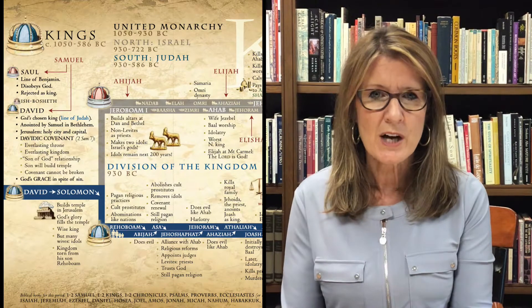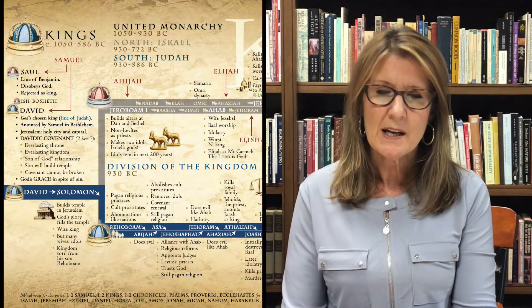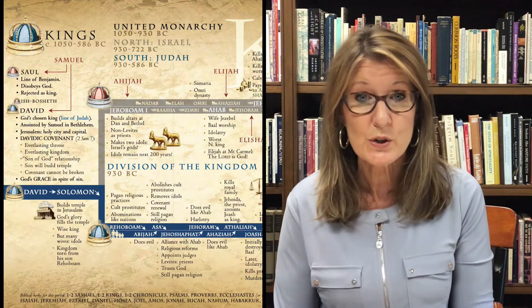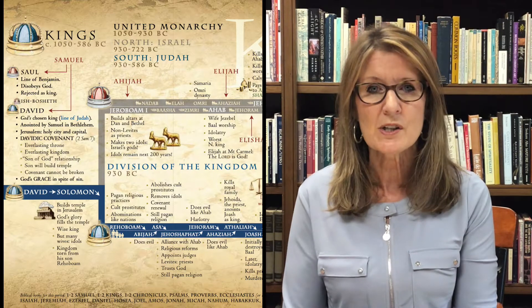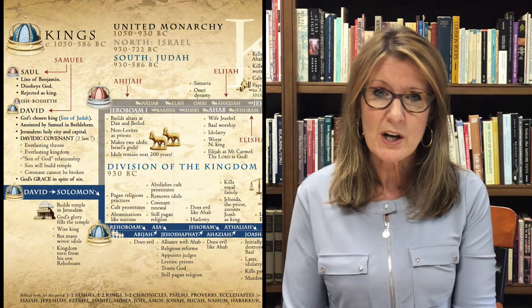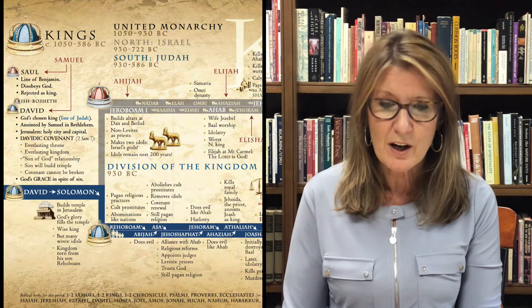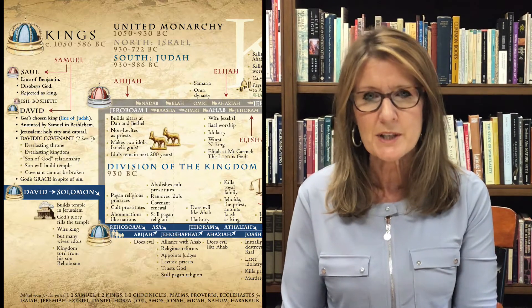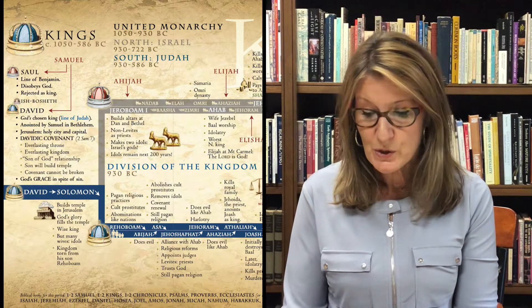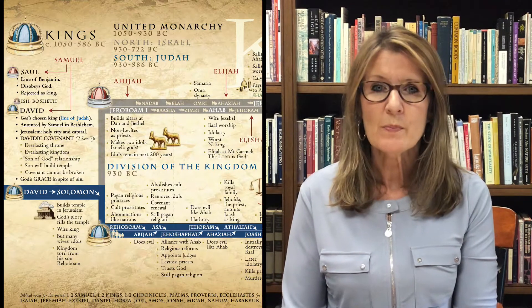As we begin our period of kings, take out the timeline and see where we are within the storyline. On the timeline you'll notice a blue crown for kings, and a line running through 12 tribes of Israel, then the line of Judah in blue, continuing through David, Solomon, and Rehoboam all the way through the southern kingdom. There is also a red crown, which represents Saul.